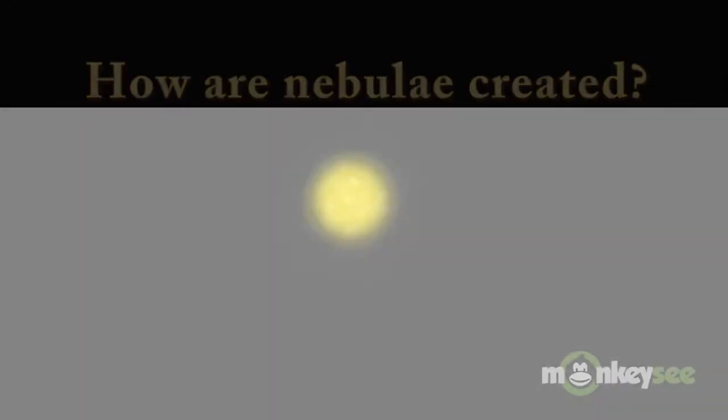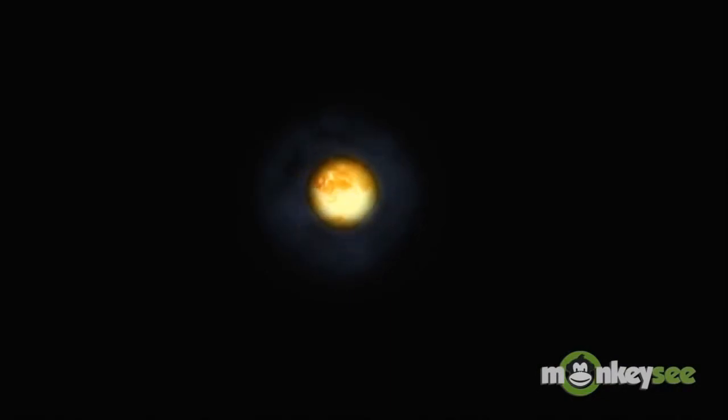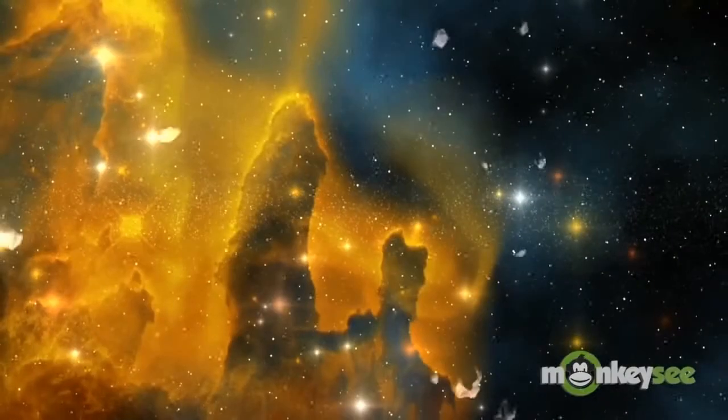How is a nebula created? It can form in two different ways. When a giant star explodes in a supernova, the explosion sends material into space. Then this matter clumps together by gravitational attraction and creates a nebula.